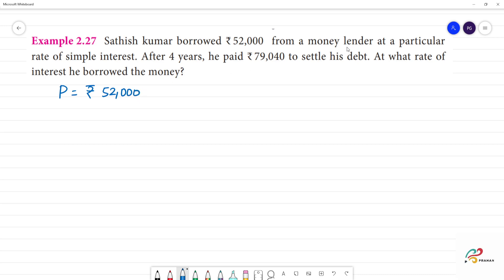From a money lender. At particular rate of simple interest, we can calculate the rate of simple interest. After 4 years, the time is equal to 4 years. He paid, that's the total amount, which is Rs. 79,040.